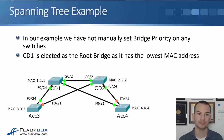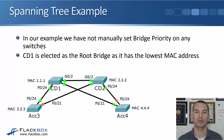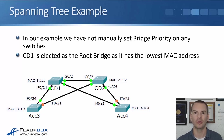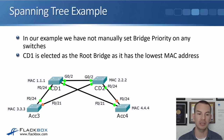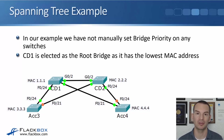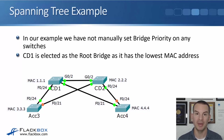In our spanning tree example, bridge priority has not been manually set on any of the four switches: CD1, CD2, Access 3, and Access 4. CD1 has MAC address 1.1.1, CD2 is 2.2.2, Access 3 is 3.3.3, and Access 4 is 4.4.4. Because no bridge priority was set, CD1 will be elected as the root bridge since it has the numerically lowest MAC address.